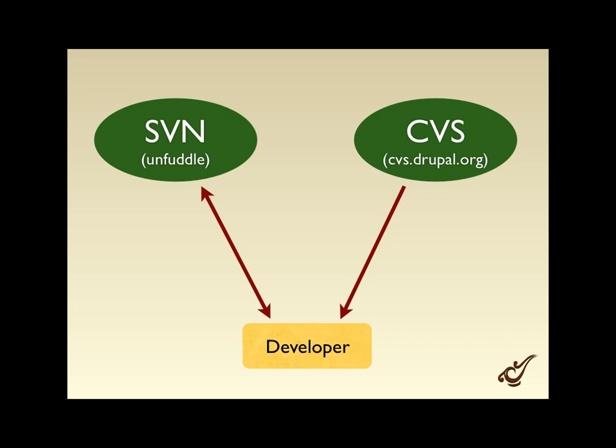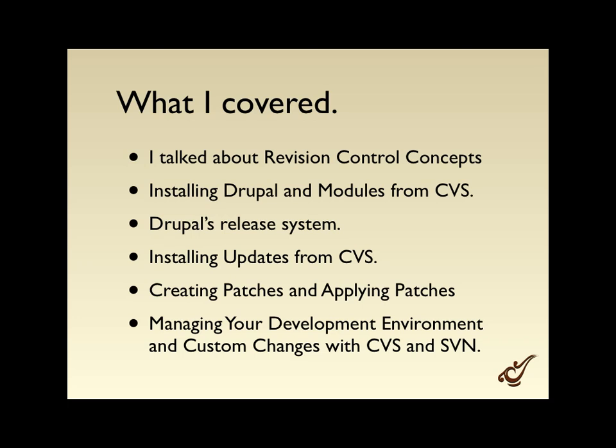To wrap up, what we covered today: revision control concepts, decentralized versus centralized version control and the advantages of each — SVN and centralized being simpler, decentralized a little more complicated but with much more capability. We looked at installing Drupal and modules from CVS to easily manage updates and patches submitted to the issue queue. We looked at the Drupal release system with its branches and tags as specific points in time of the development cycle. We talked about creating and applying patches using different tools, and managing your development environment using two different version control systems — in our case CVS and SVN.